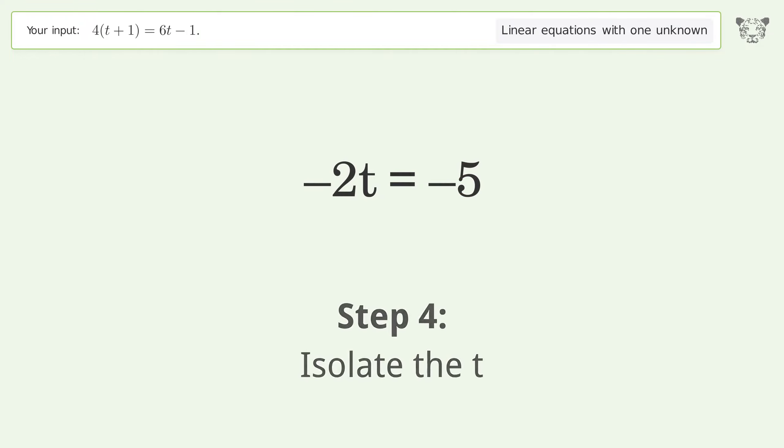Isolate the t. Divide both sides by negative 2. Cancel out the negatives.